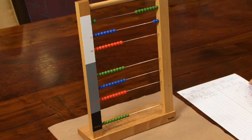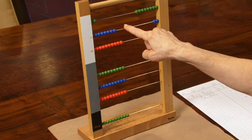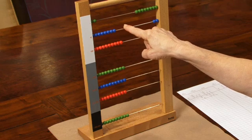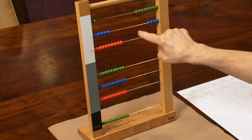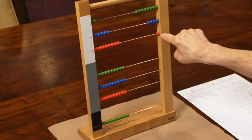30 taken 4 times, or 3 tens taken 4 times is 12 tens, 2 tens, 100.